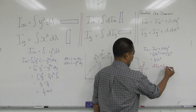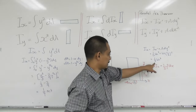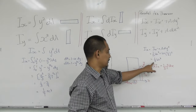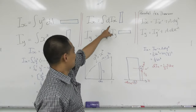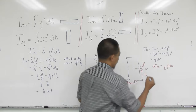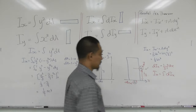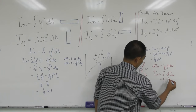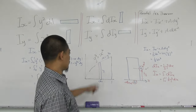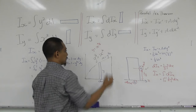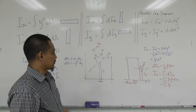Let me draw the area for reference: height h, base b, and the equation is y = (h/b³)·x³. We need to find Ix and Iy. Let's first try Ix using the horizontal element: Ix = ∫y² dA, where dA = (b − x)dy. We need to express x in terms of y. From y = (h/b³)x³, we get x³ = (b³/h)·y, so x = (b/h^(1/3))·y^(1/3). Therefore dA = [b − (b/h)^(1/3)·y^(1/3)]dy.